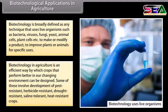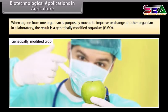Some of these involve development of pest resistant, herbicide resistant, drought resistant, saline tolerant, and heat resistant crops. When a gene from one organism is purposely moved to improve or change another organism in a laboratory, the result is a genetically modified organism, or GMO.